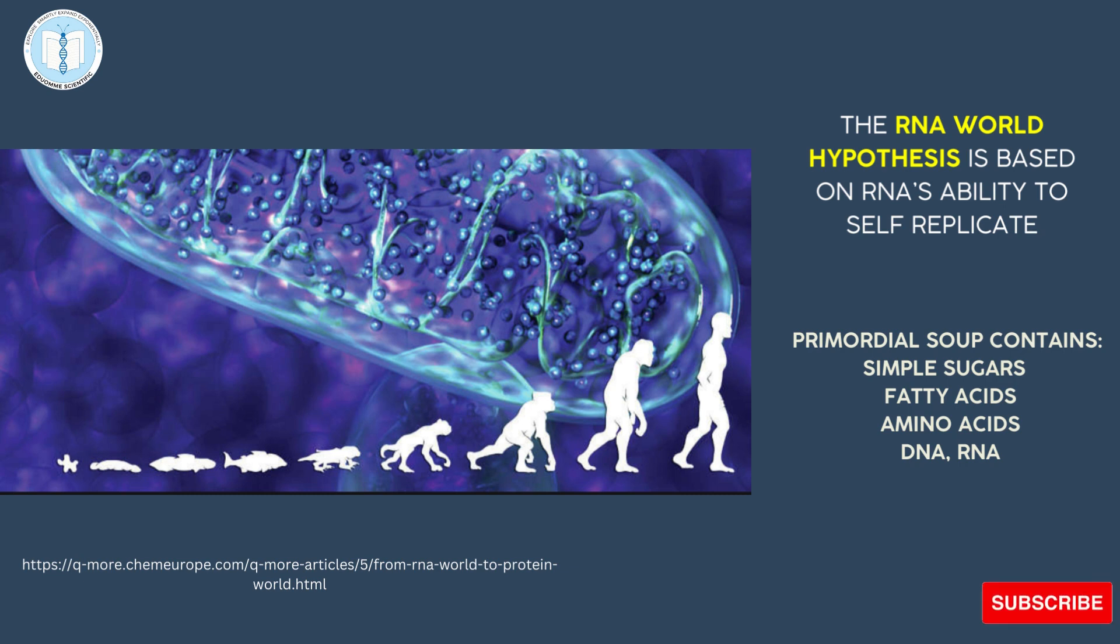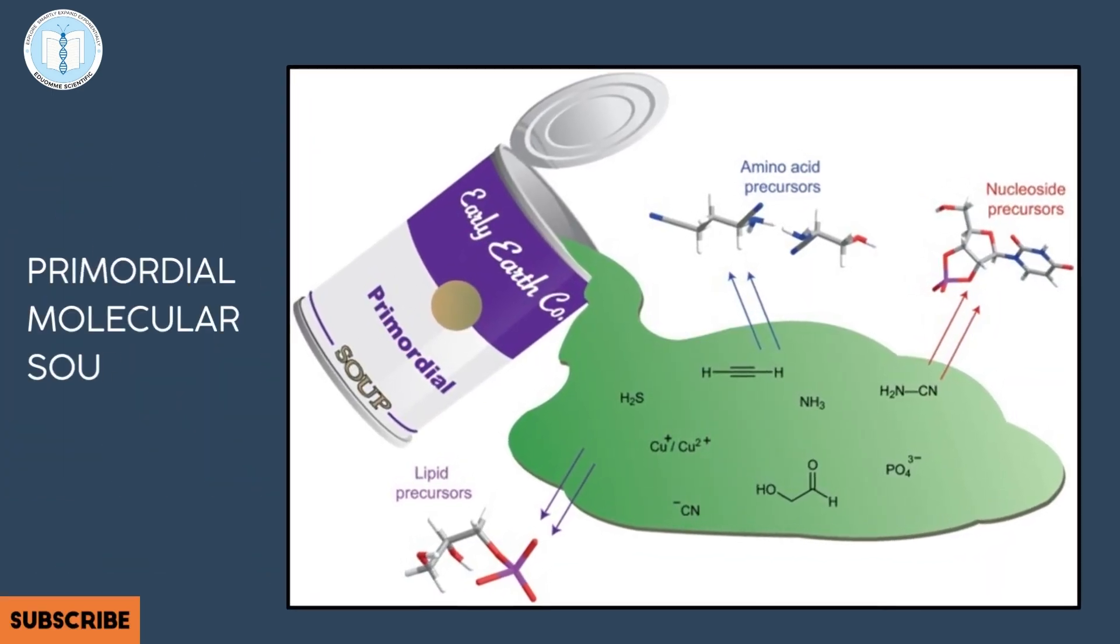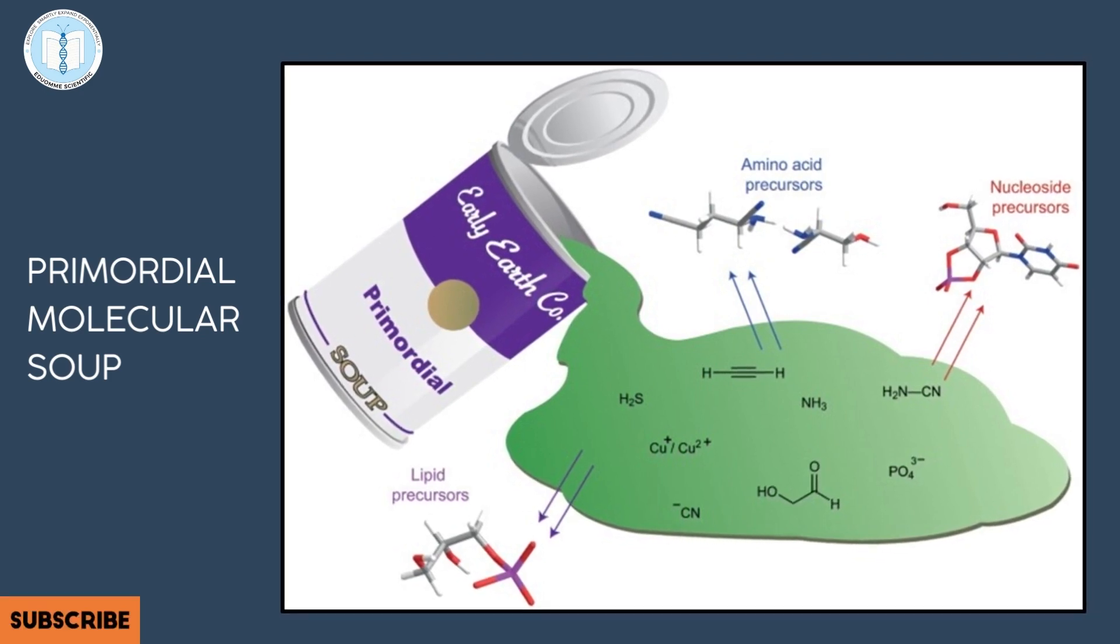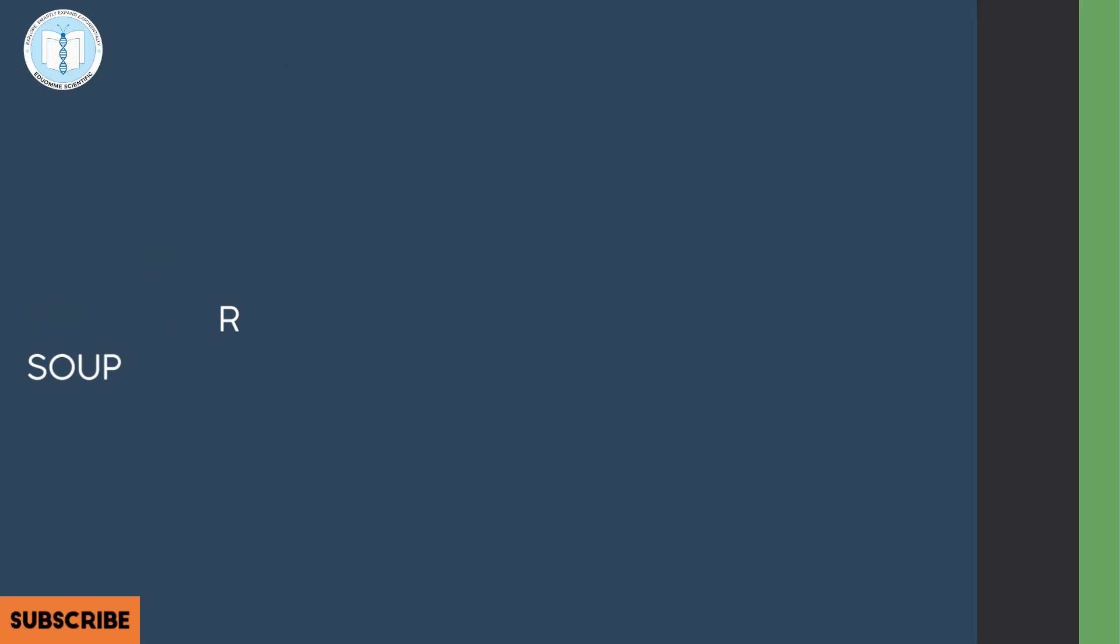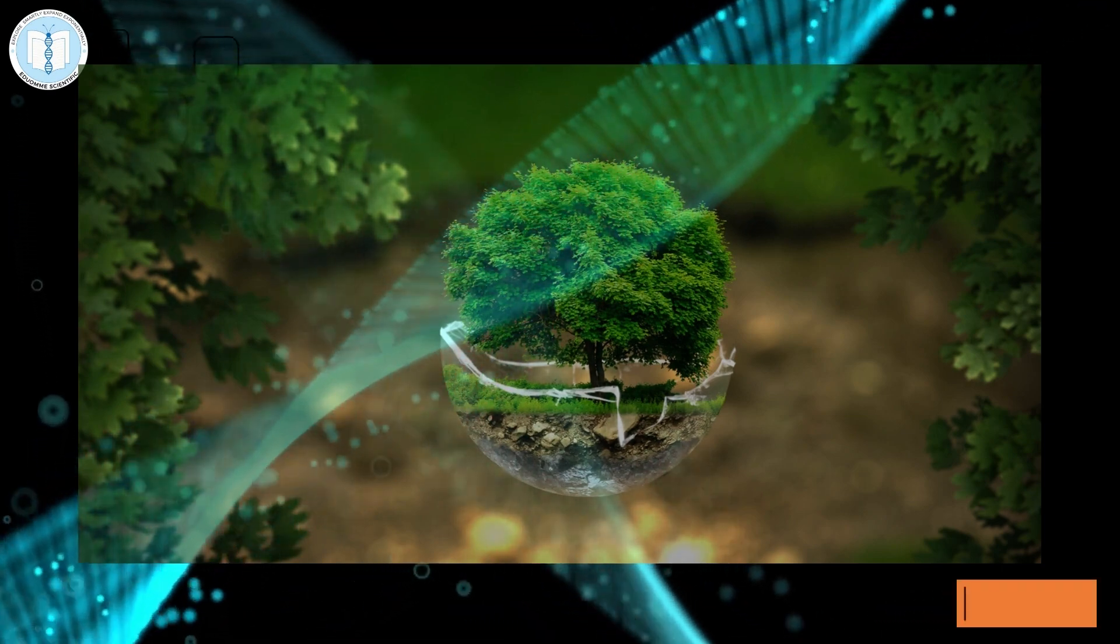The RNA world hypothesis describes how before the existence of DNA and cells, RNA strands formed naturally within the primordial soup and eventually went on to become the first simple living cells. Eventually, self-copying RNA emerged. The structure of the RNA would have influenced how quickly and successfully it could replicate until one self-copying RNA outcompeted the rest through natural selection.